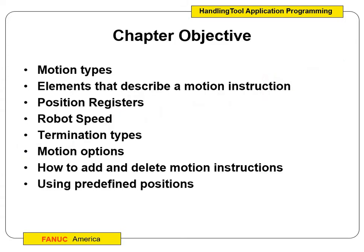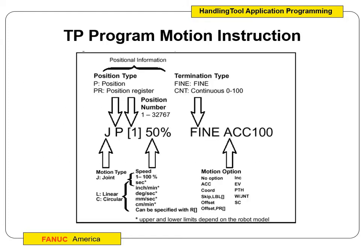We're going to talk about different motion types — what motion instructions are, what position registers are, how to adjust the speed, how the DCS is going to come into play, different types of termination, how we add and delete instructions using predefined positions and position registers. If we want to break down motion instructions, we'll break them down into these different parts.